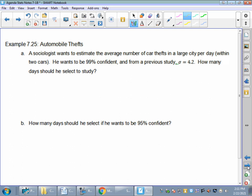So let's talk about this automobile thefts. I don't think that we need to do them both, but I do want to compare them. So a sociologist wants to estimate the average number of car thefts in a large city per day within two cars. He wants to be 99% confident. And from a previous study, sigma equals 4.2. How many days should he select to study? Well, days, how many days is my sample size? Because it says he wants the average number of car thefts per day. So I know I'm looking for N sample size.